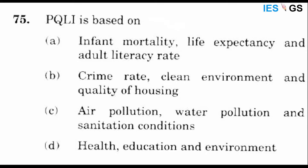Question 75. PQLI is based on: A) infant mortality, life expectancy, and adult literacy rate; B) crime rate, clean environment, and quality housing; C) air pollution, water pollution, and sanitation conditions; or D) health, education, and environment.